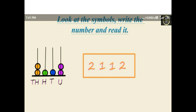Look at the symbol — the abacus. Write the number and read it. We already learned about the abacus in the previous class. On the abacus: thousand place has two beads, hundreds place has one bead, tens place has one bead, and unit place has two beads. The number is two thousand one hundred and twelve.